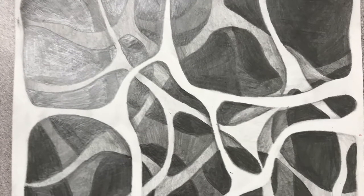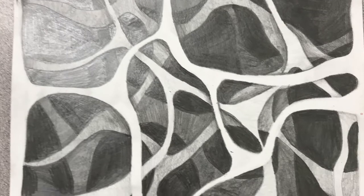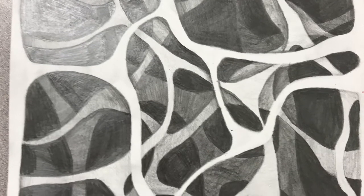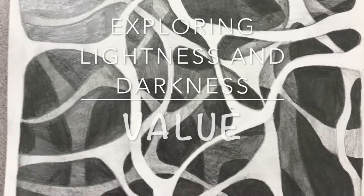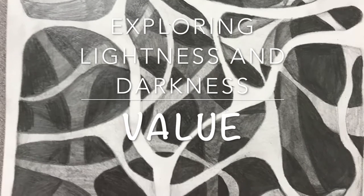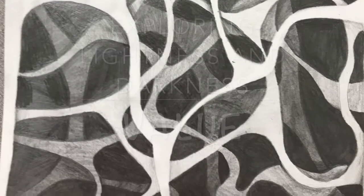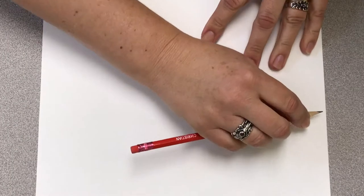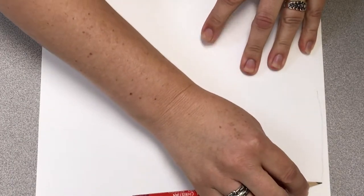What you're looking at here is our next assignment exploring value, which is one of our elements of art. Value is the lightness and darkness of the image you're looking at. To start, you're going to draw out some organic shapes onto your paper.